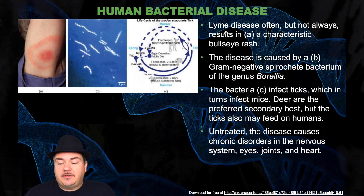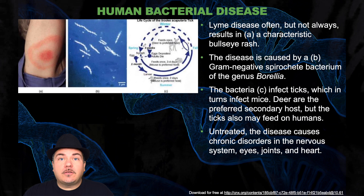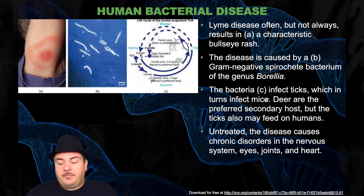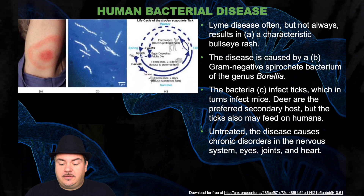Another example is Lyme disease. Lyme disease often, but not always, results in a characteristic bullseye rash. The disease is caused by a gram-negative spirochete bacterium. The bacteria infects ticks, which in turn infect mice. Deer are the preferred secondary host, but the ticks can also feed on humans. Late-stage disease causes chronic disorders in the nervous system, eyes, joints, and heart.